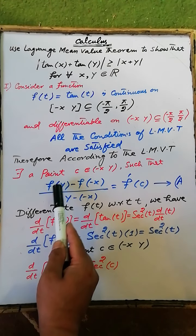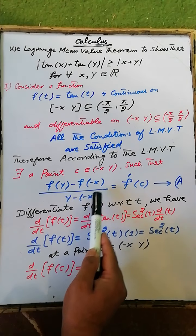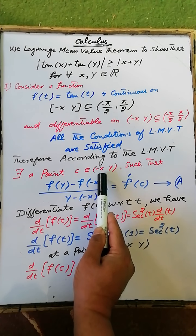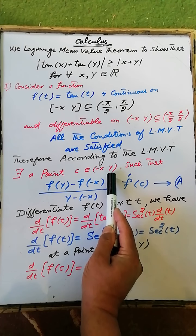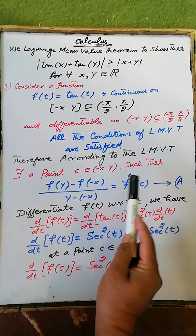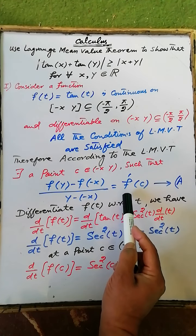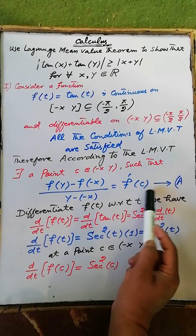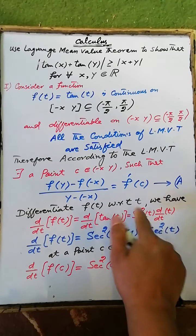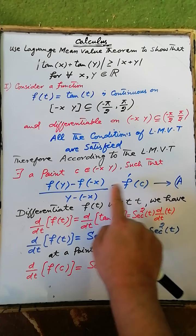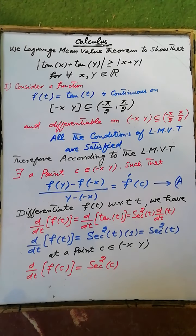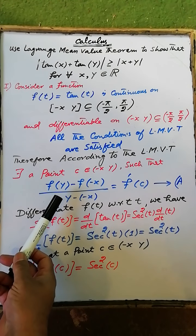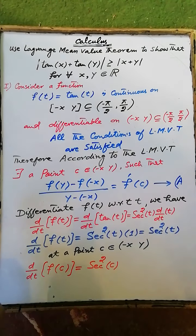Geometrically, this is the slope of the chord passing through the endpoints (-x, f(-x)) and (y, f(y)), which equals the slope of the tangent line at point c on the given curve. That is, this tangent line is parallel to the chord passing through the endpoints of the graph of the given function.